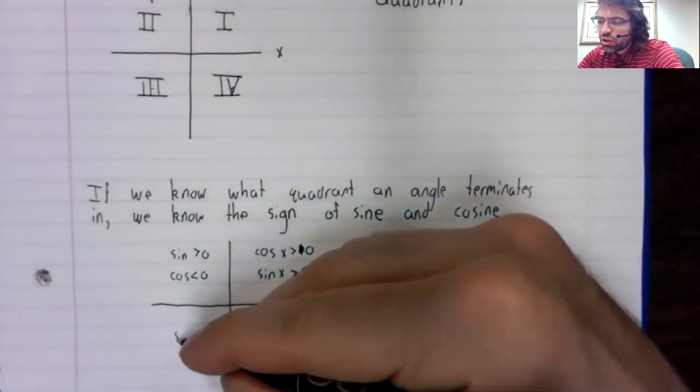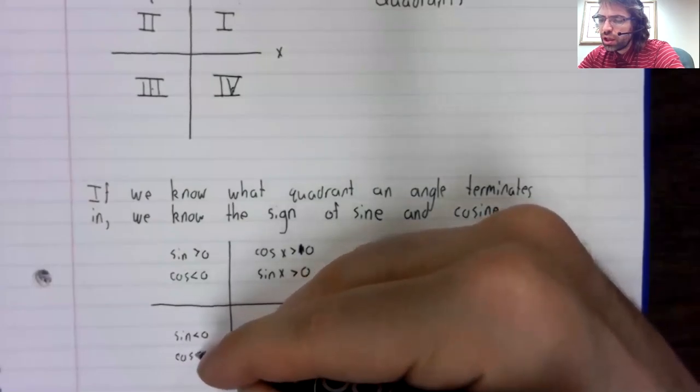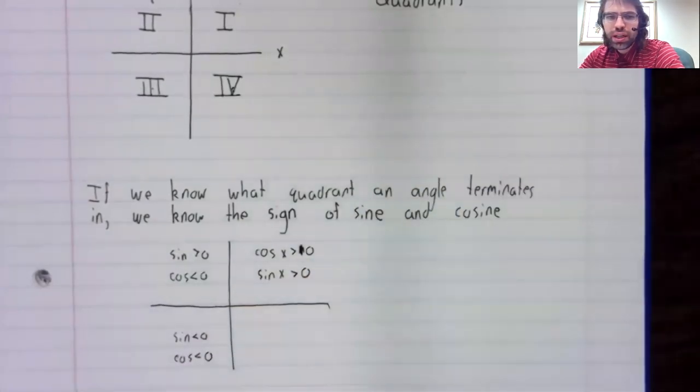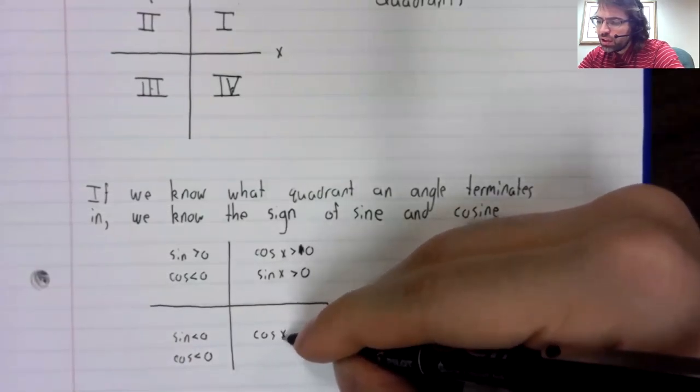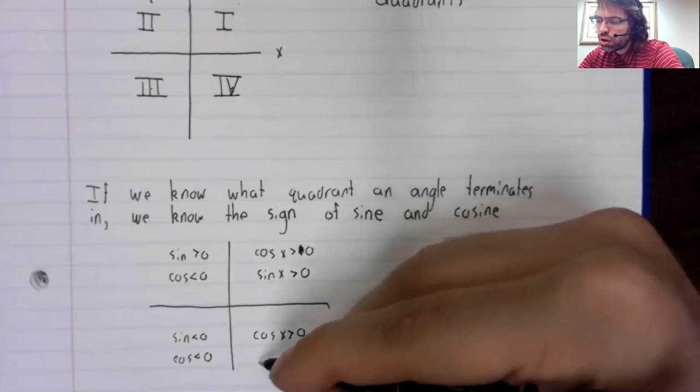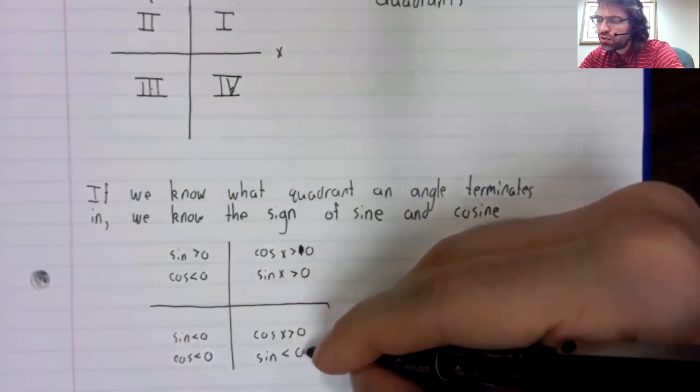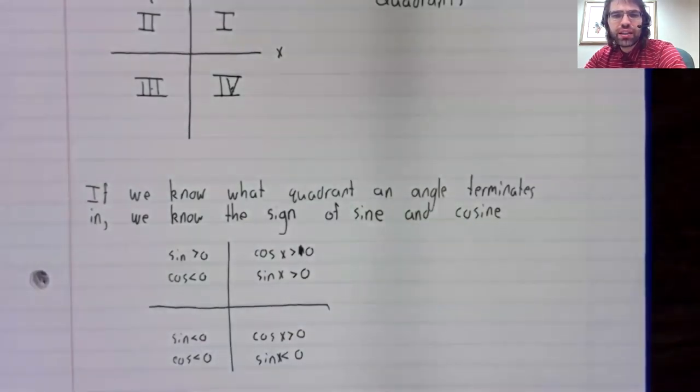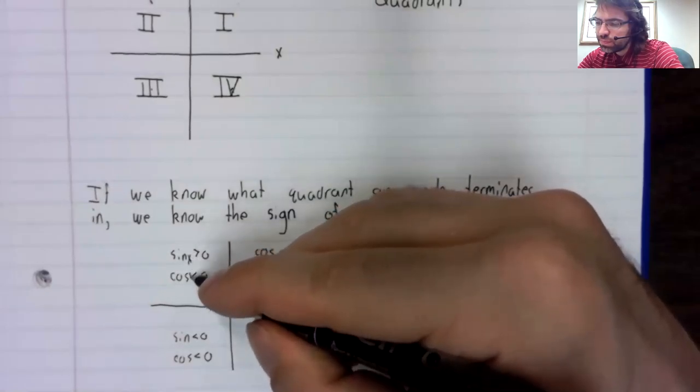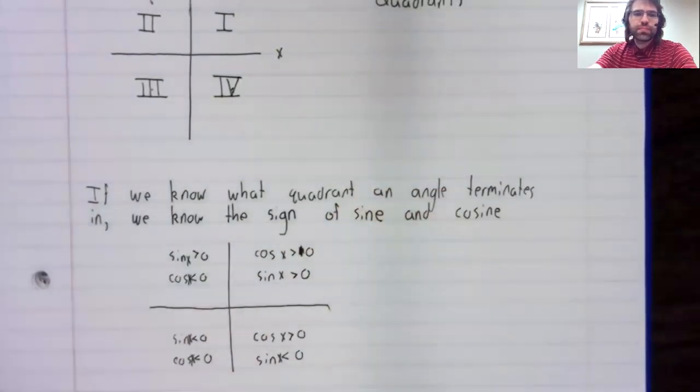In the third quadrant, they are both negative. In the fourth quadrant, the cosine is positive but the sine is negative. I'll see you next time.